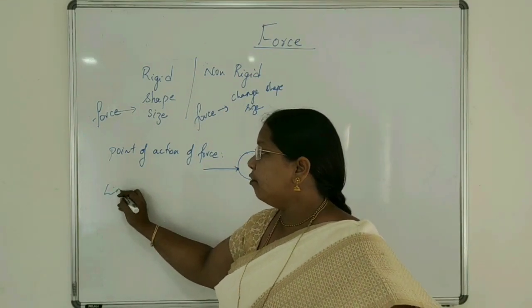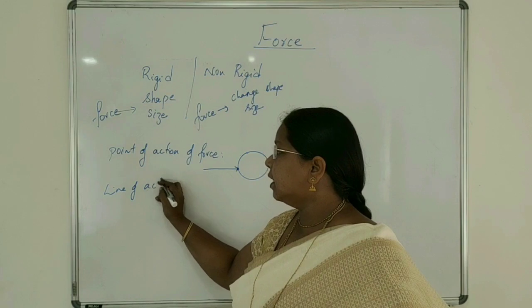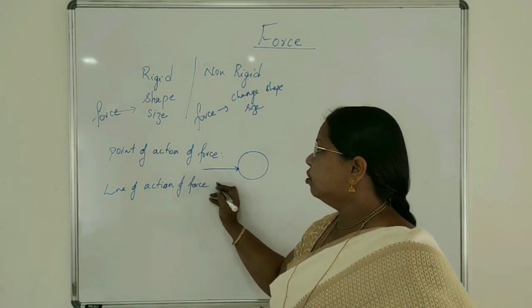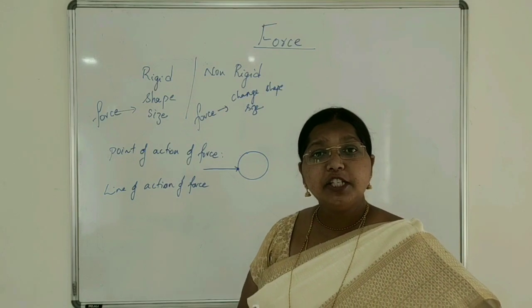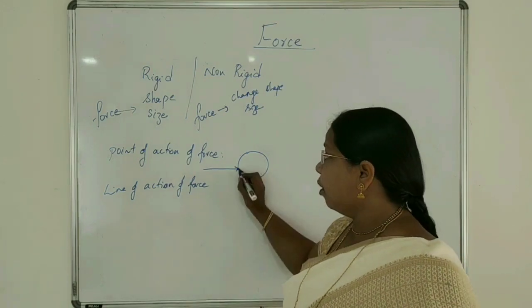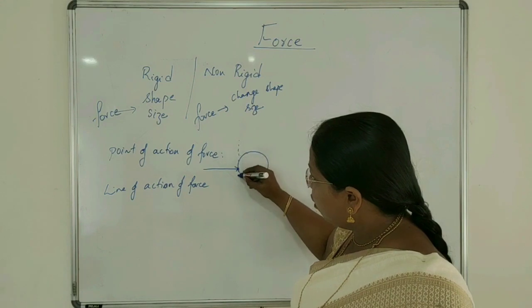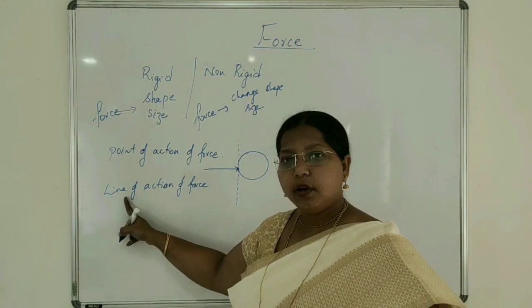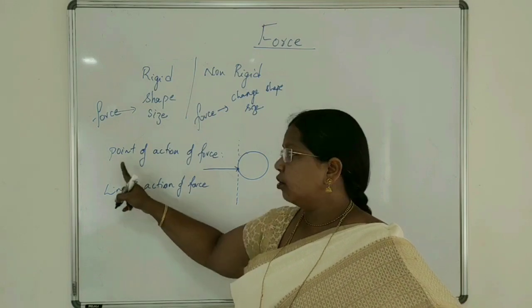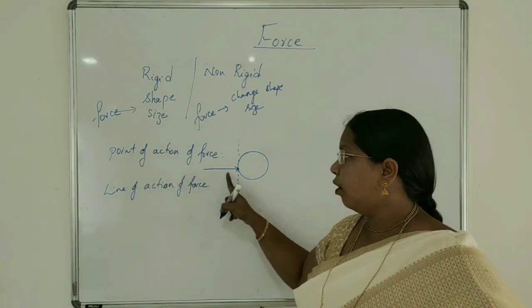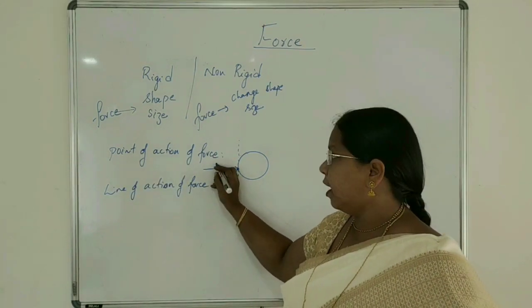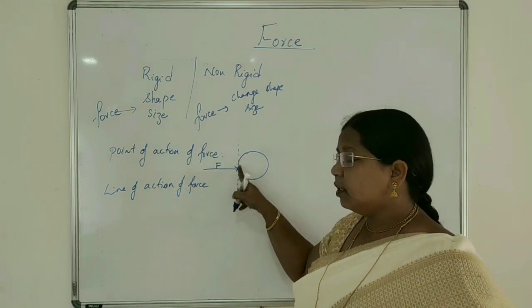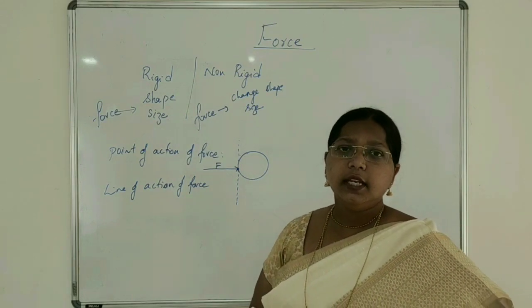Next is the line of action of force. This is an imaginary line drawn along the point of action of force, and it is called the line of action of force. So, the point of action of force is the point where the force is applied, and the line of action of force is an imaginary line drawn along that point.